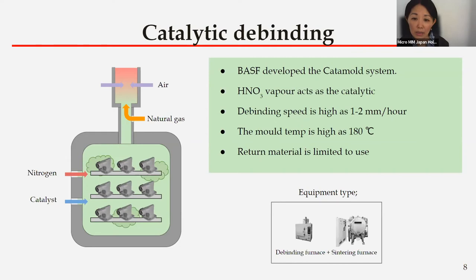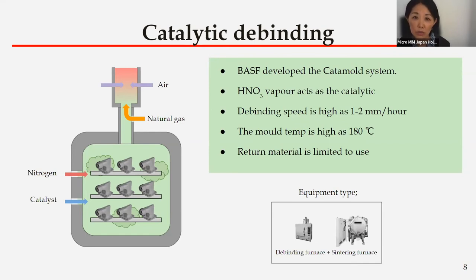On the other hand, flowability is slightly limited, especially for thin or small MIM components. Recently BASF introduced a newly developed high-flowability series called Catamold EVO, where the flowability is improved. However, the mold temperature is still required to be set high at 180 degrees for the injection process, so thermal degradation is significant, which leads to poor material yield. Same as solvent debinding, it is required to use a special debinding furnace capable of handling nitric acid — thus the debinding and sintering furnaces must be separated in the catalytic debinding process.